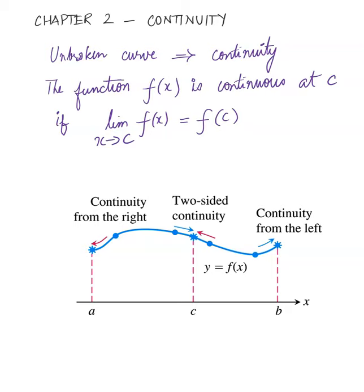Throughout the graph, you have solid dots, meaning there are no open circles to indicate a gap in your function. So if we choose any interior point C and want to call the function continuous, we should be able to approach that point from both the left and right, and that value must equal f(c), because c is part of the function.